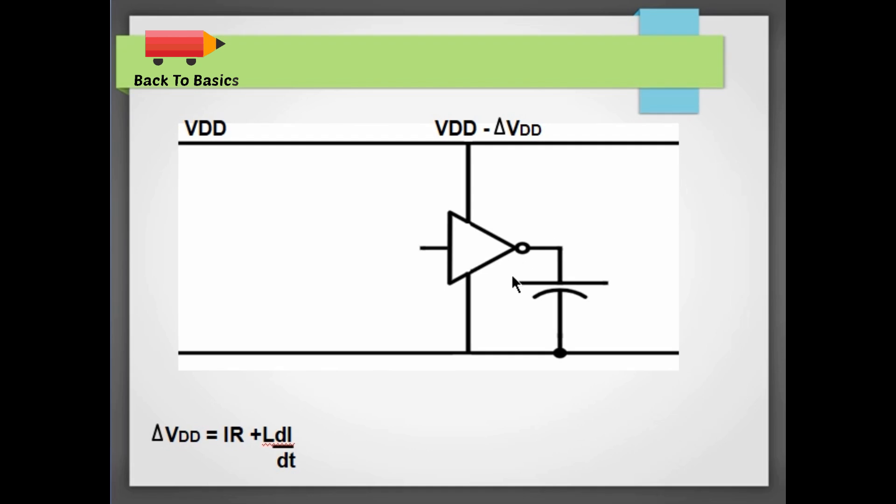So now let's say the noise margin of this inverter is 0.3, and 1 minus 0.3 is 0.7. So anything less than 0.7 will be considered as 0 by this inverter and not 1. So now let this delta VDD be 0.4.